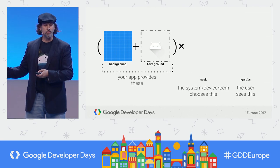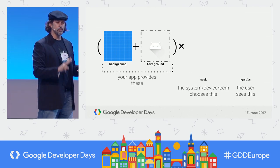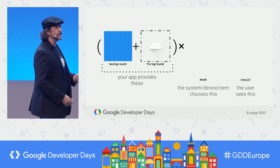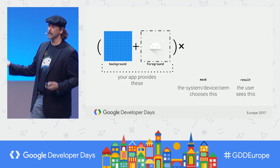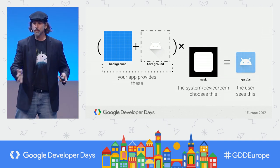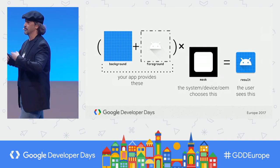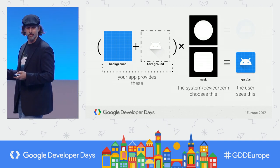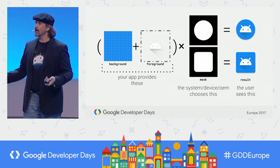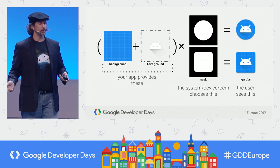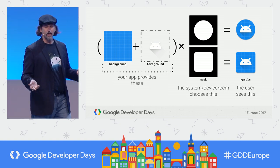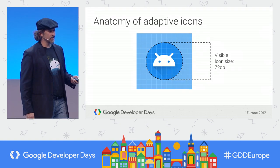To enable this customization, your app provides icons in two layers: background and foreground. So if the OEM defines a rounded rectangle mask shape, the user will see that. If they define a circular shape, it looks like that. This applies everywhere your icon appears in the system UI, such as inside the settings app list, the recents overview title bar, and your share sheet dialog.